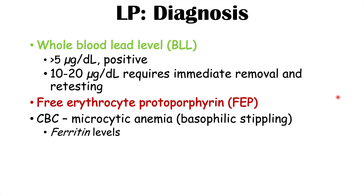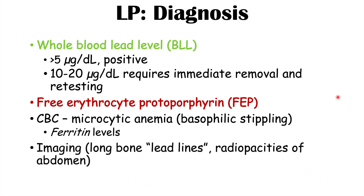It's important to look at ferritin levels as well. Imaging can be important in some cases — long bone lead lines, if found, are significant. In some cases there may also be radio-opacities of the abdomen if there has been ingestion of lead.